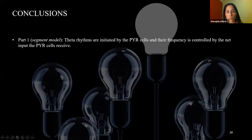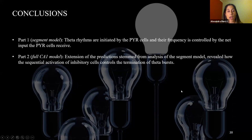In summary: in the first part, using the segment model, we showed that theta rhythms are initiated by the pyramidal cells and that theta frequency is controlled by the net input they receive. In the second part, I showed how the termination of the pyramidal cell theta burst is controlled by sequential activation of inhibitory classes. Thank you very much for your attention.